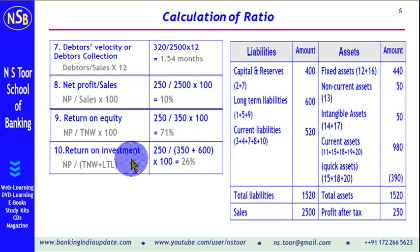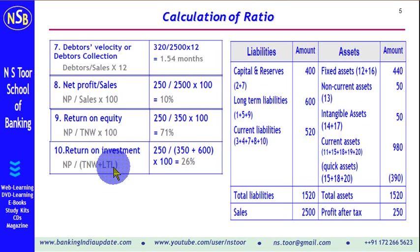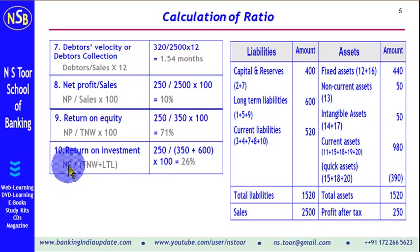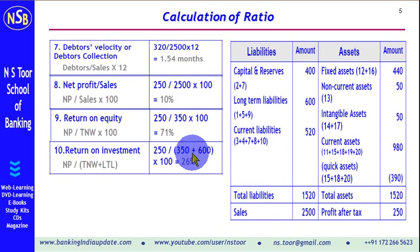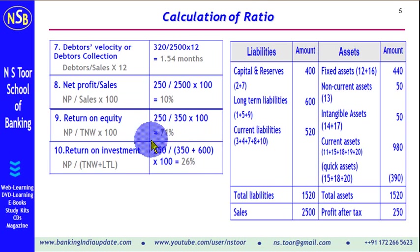Return on investment, also known as return on capital employed, is calculated as net profit divided by tangible net worth plus long-term liabilities. Net profit is 250, tangible net worth is 350, and long-term liabilities are 600, so the denominator is 950. The return on investment is 26%. There is no benchmark for these profitability ratios.